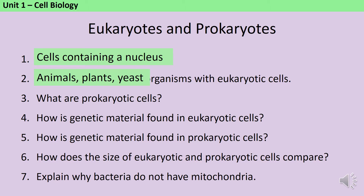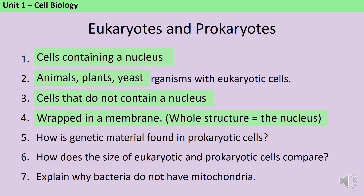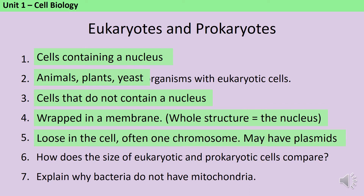Prokaryotic cells are those that do not contain a nucleus. In a eukaryotic cell, the genetic information is found wrapped in a membrane and the whole structure is called the nucleus. In prokaryotic cells, the DNA is found loose in the cell, often as a single chromosome. Some bacteria may also have plasmids, small circular pieces of DNA that are not essential to the cell's functions.